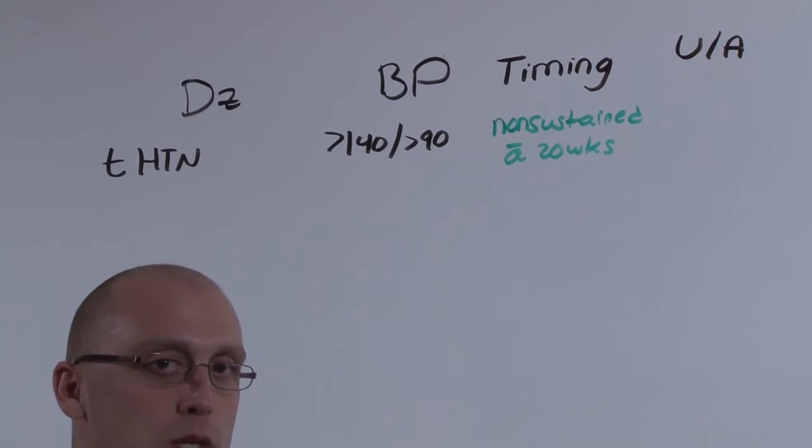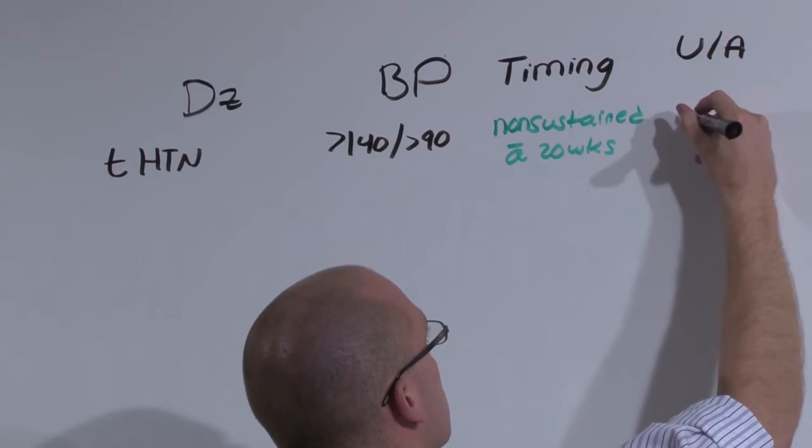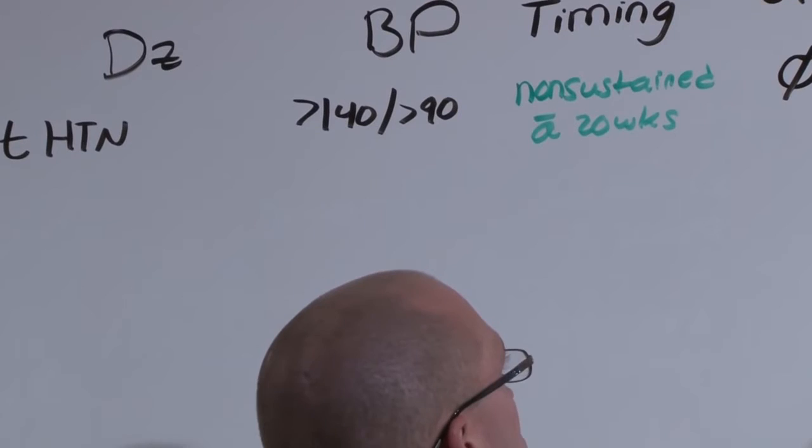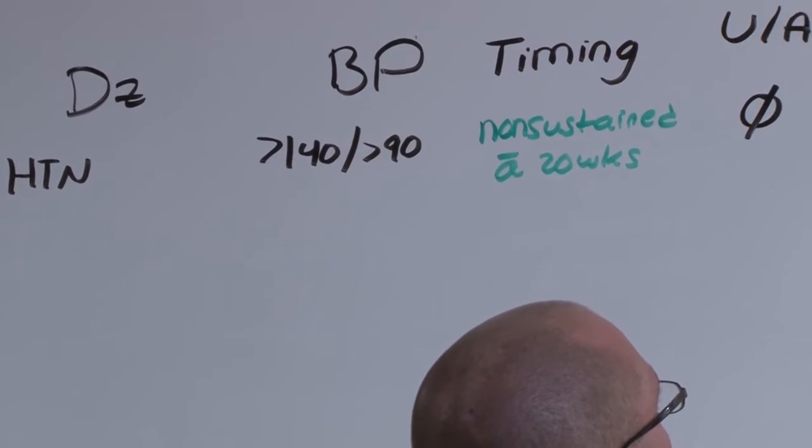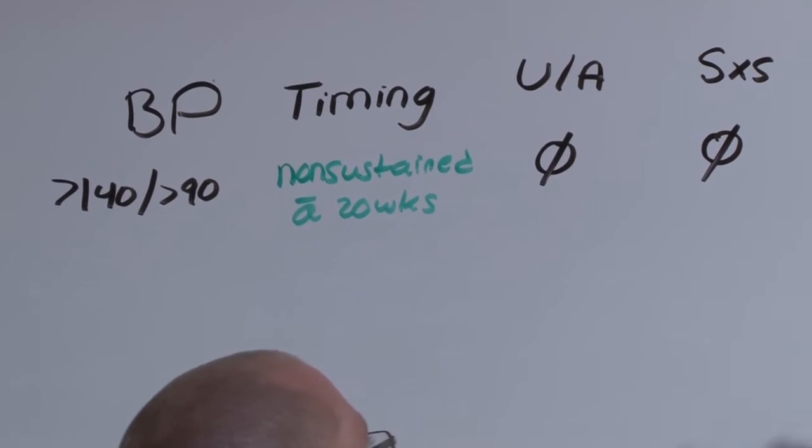There hasn't been enough time to cause any damage to the kidneys, so there's going to be nothing on urinalysis, and being normal hypertension, the patient will feel nothing. The only thing you have to do for this patient is keep a log. See if she develops full hypertension.